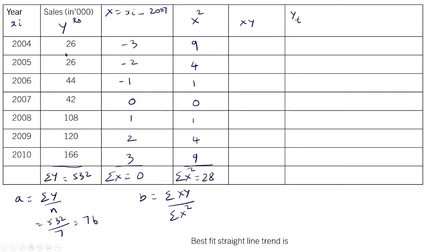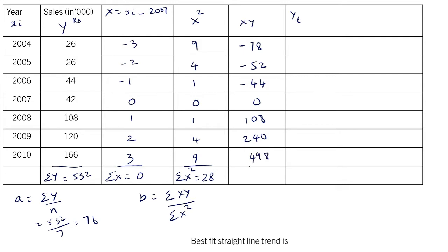Now we have to find xy. The first value is 26 × (−3) = −78, then 26 × (−2) = −52, then 44 × (−1) = −44, then 42 × 0 = 0, then 108 × 1 = 108, then 120 × 2 = 240, then 166 × 3 = 498. When we add all these, summation xy equals 672. So b equals 672 upon 28, which is 24.